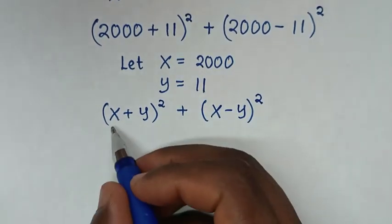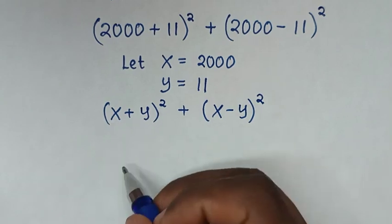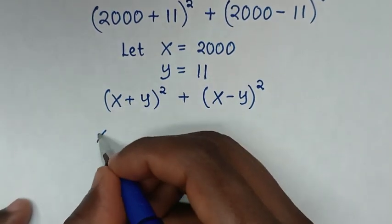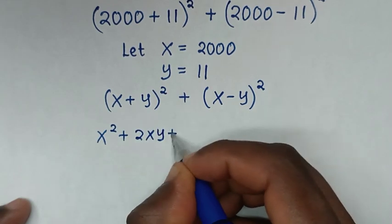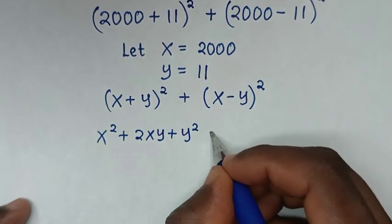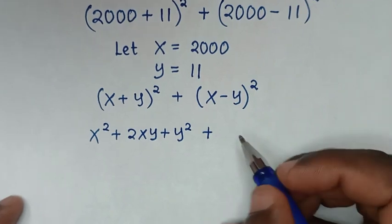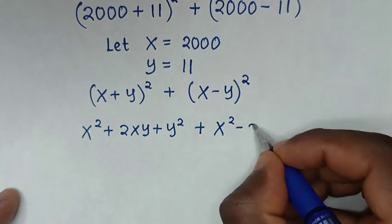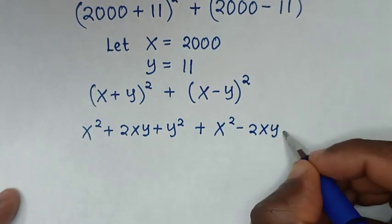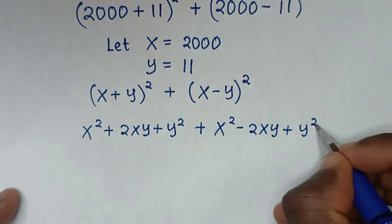In the next step we expand (x + y)², which is x² + 2xy + y², then plus we expand (x - y)², which is x² - 2xy + y².